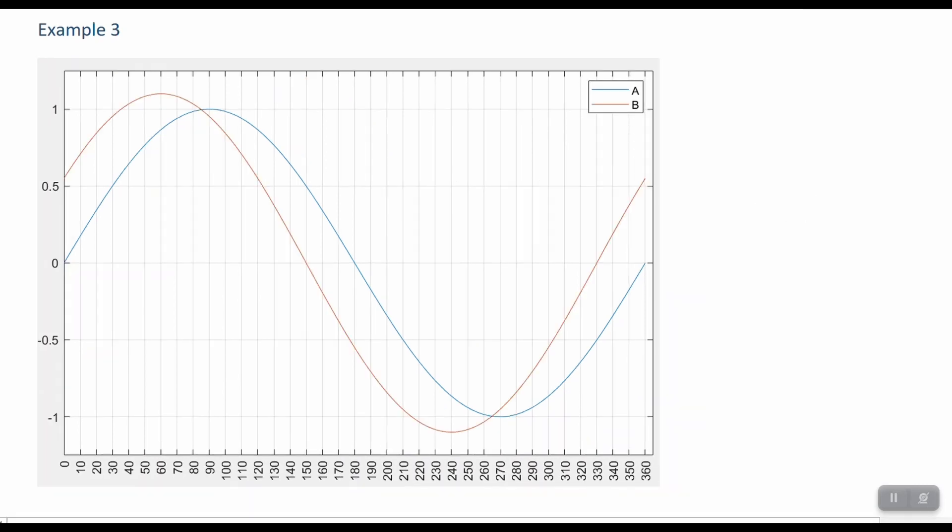Example number 3 here, you can see that B is leading A by some amount. And let's see what that amount is. Well, B is crossing the y-axis there, y equals zero point there, and A is crossing there. This is at 150, this one is at 180. So it looks like a 30 degree difference between the two. I'm just looking down here on the x-axis, 150, and this point is 180.